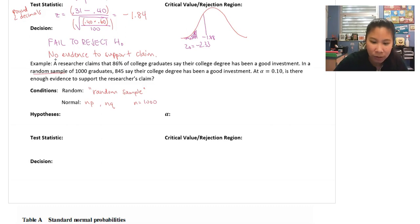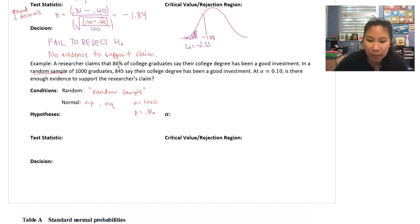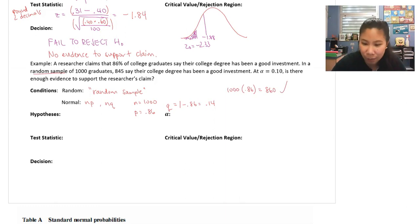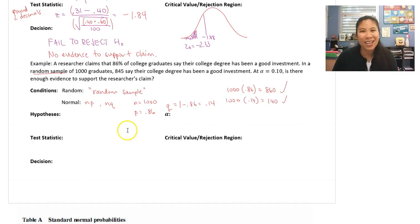For normal, we do n times p and n times q. N equals 1,000. P is the claimed 86%, so p equals 0.86. Q is 1 minus 0.86, which is 0.14. So 1,000 times 0.86 is 860, way bigger than 5. And 1,000 times 0.14 is 140, also way bigger than 5. Both conditions are met.